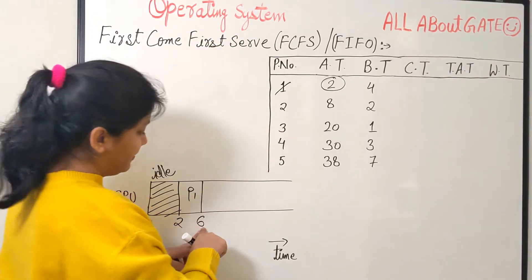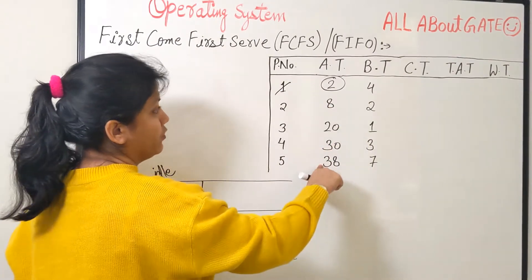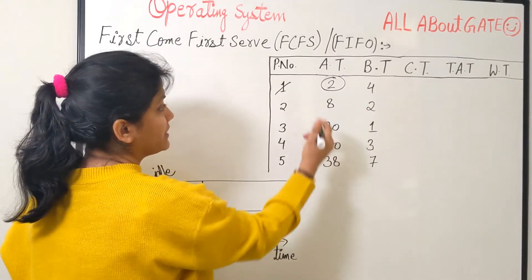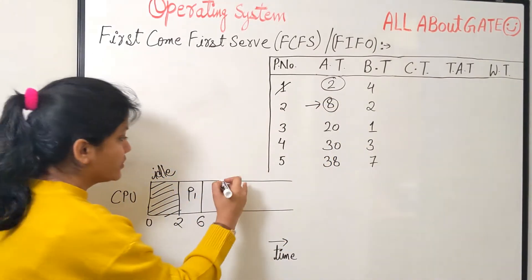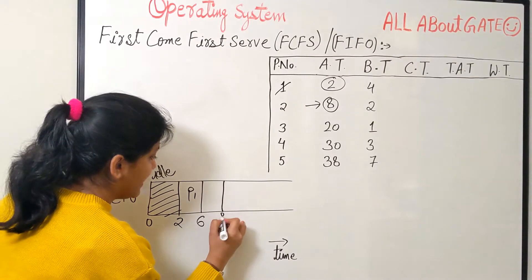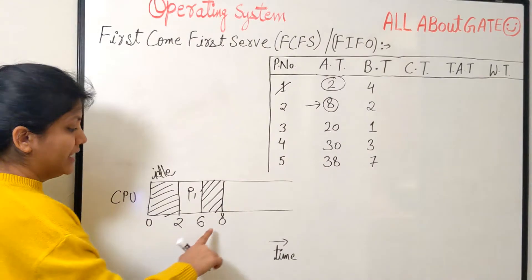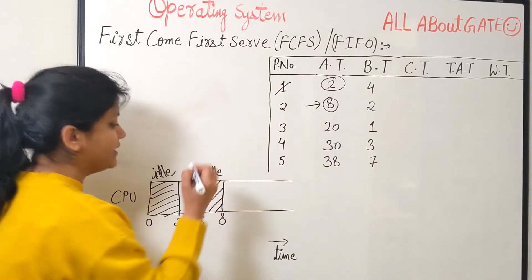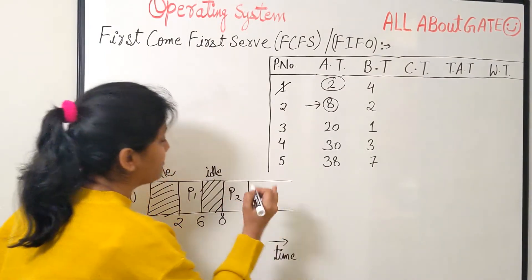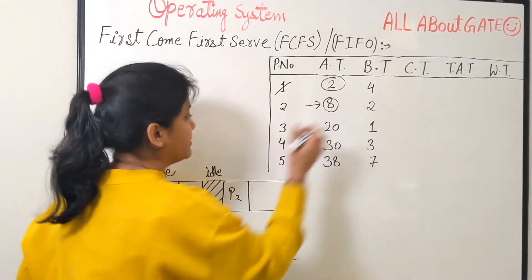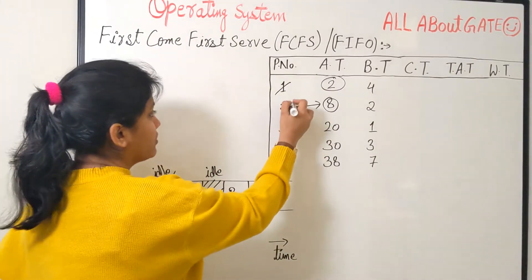Now the next process. We finished at time 6 and look at the ready queue. Which process is available? None of the processes are available. The next process available is at time 8. We are only at time 6. So now from 6 to 8 again, your CPU is idle. No computation at all. At time 8 process P2 will come. P2 needs 2 burst. So from 8 to 10. P2 also finished.